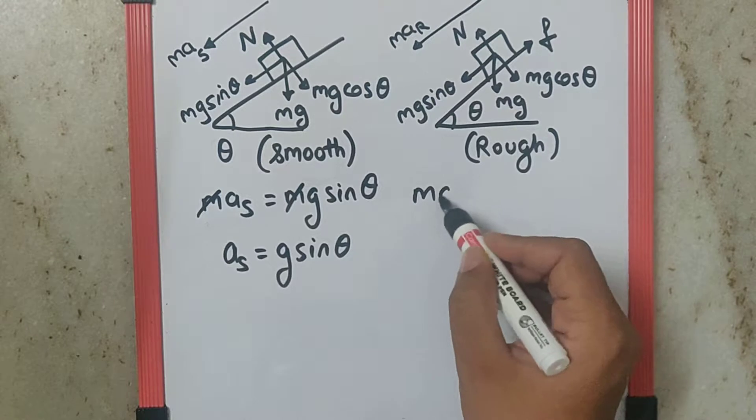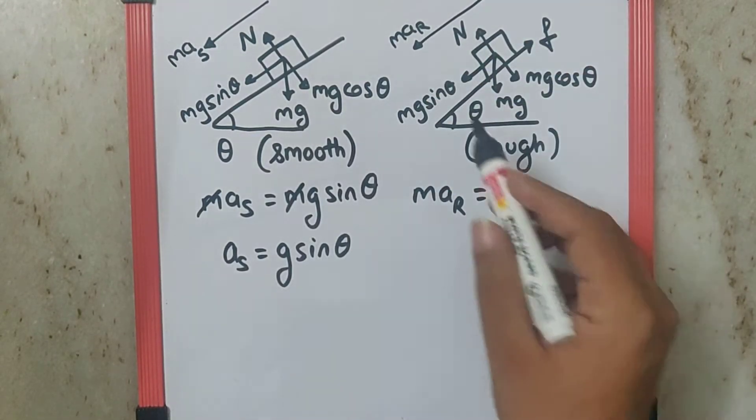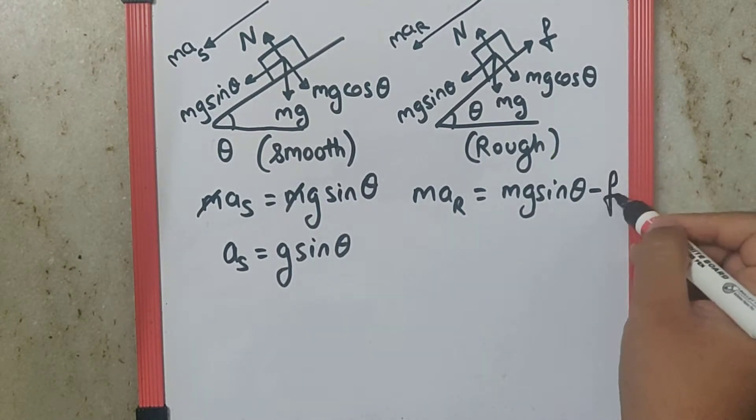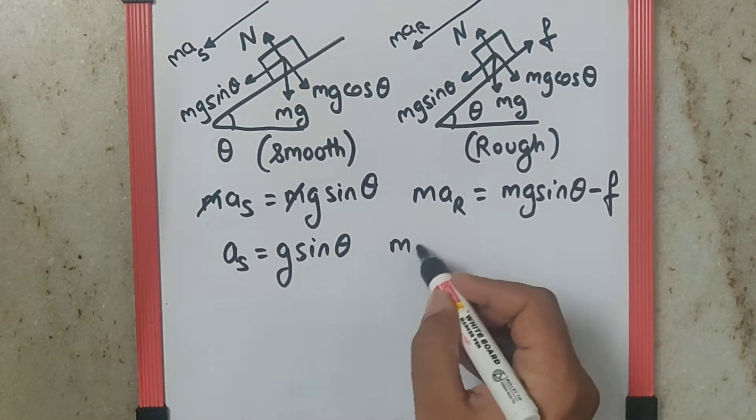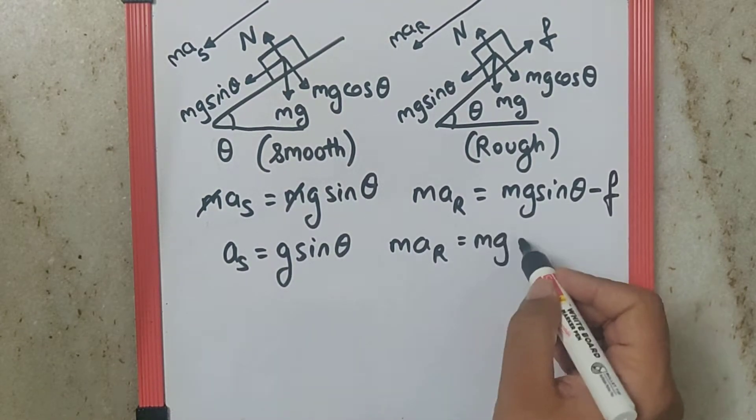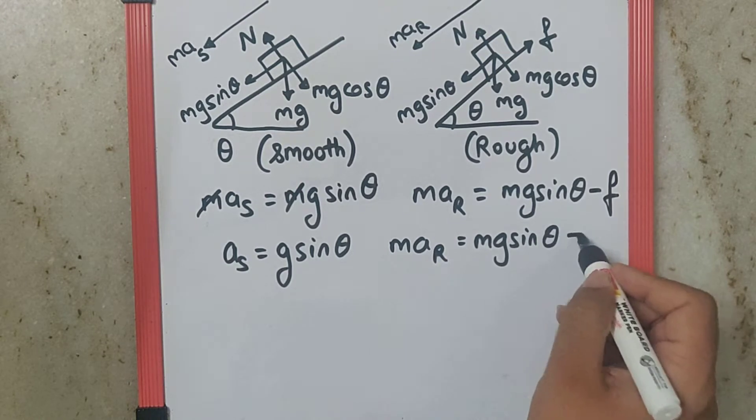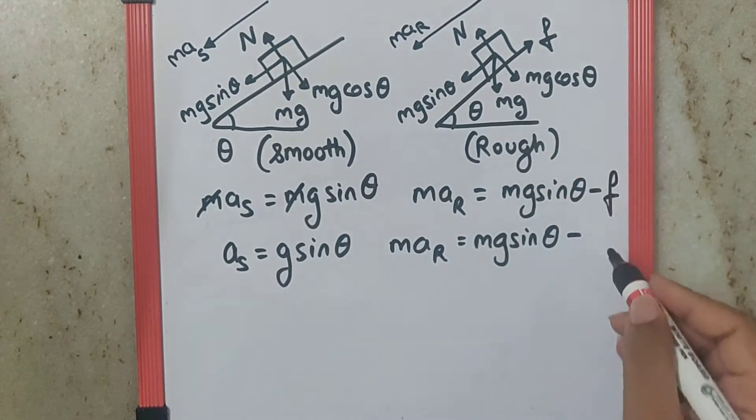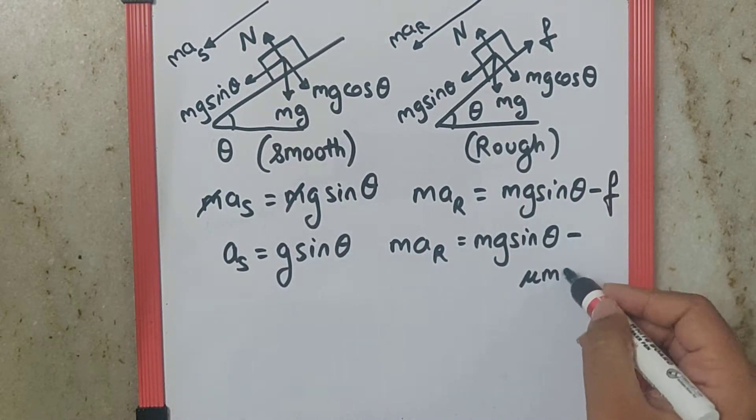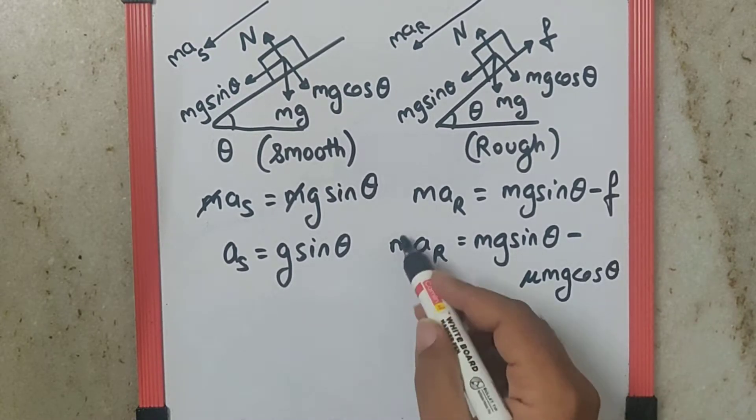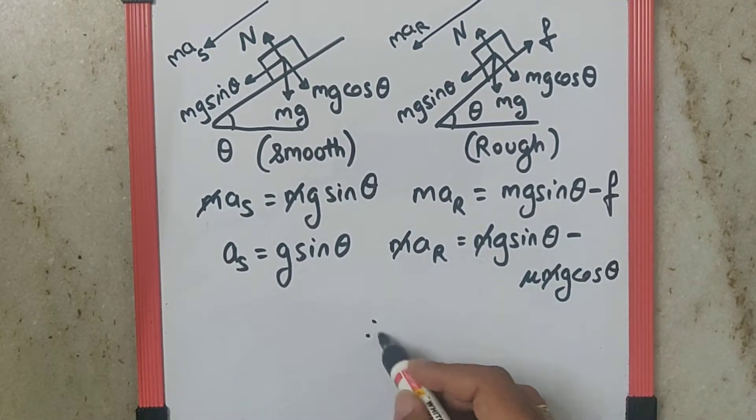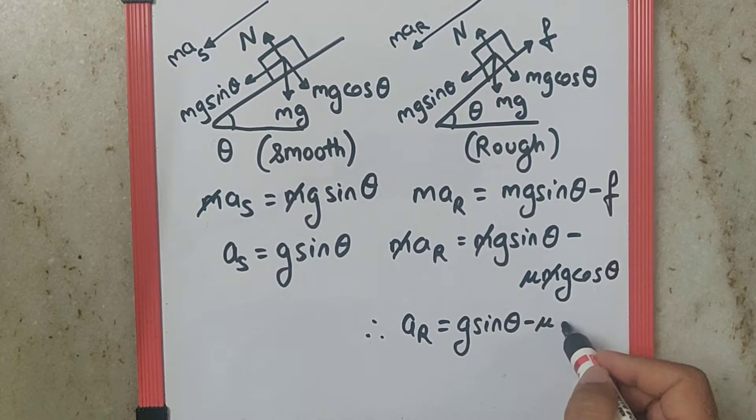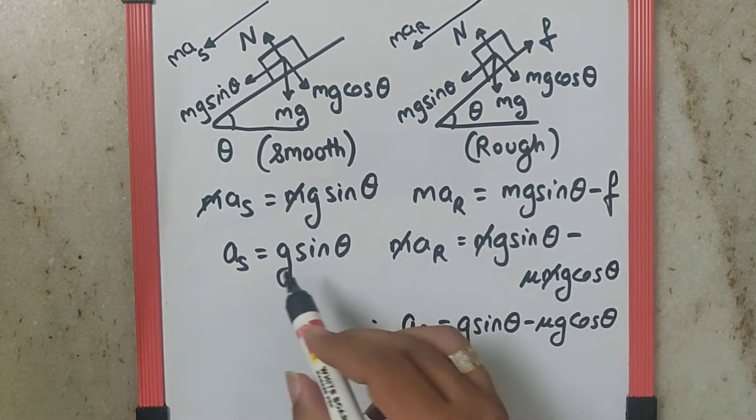Whereas over here we can say ma_r, the motion is equal to force acting in the direction of motion which is mg sin theta minus the force acting in the opposite direction which is friction. So ma_r can be written as mg sin theta minus friction which is mu times N, and where N is mg cos theta. So it is going to be mu mg cos theta. Now m can be cancelled throughout and so we get the rough surface acceleration as g sin theta minus mu g cos theta.